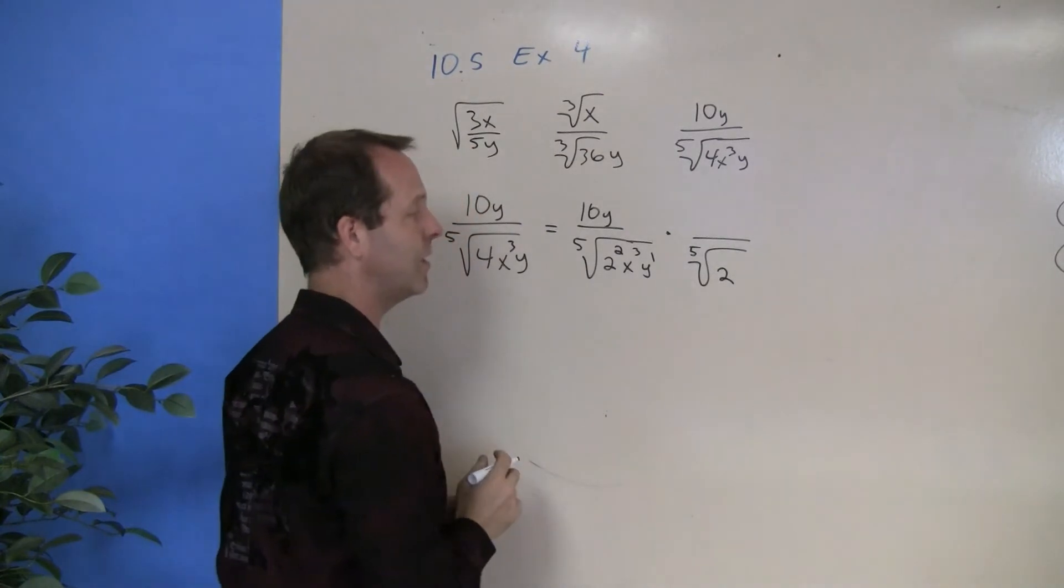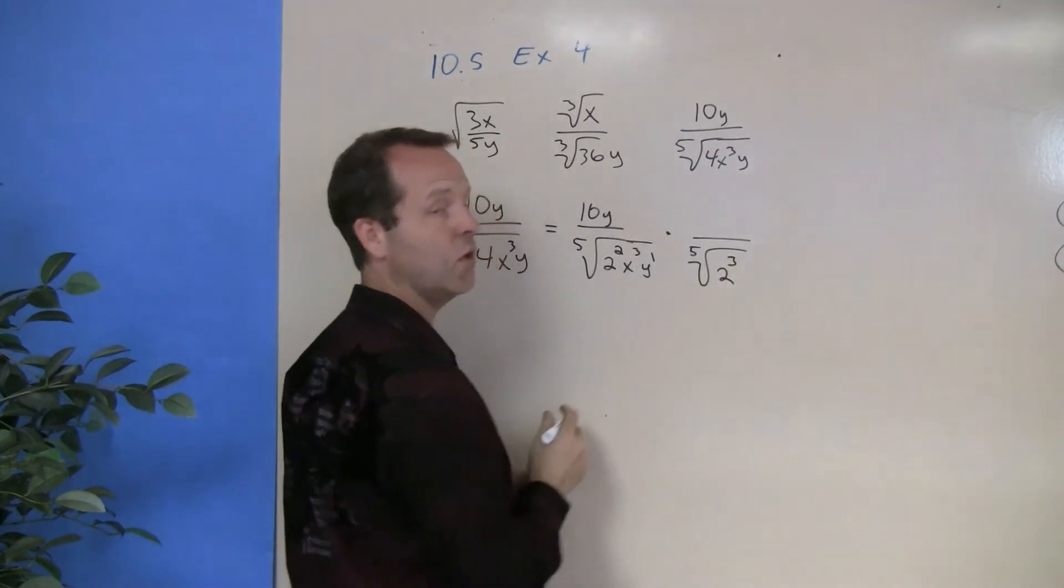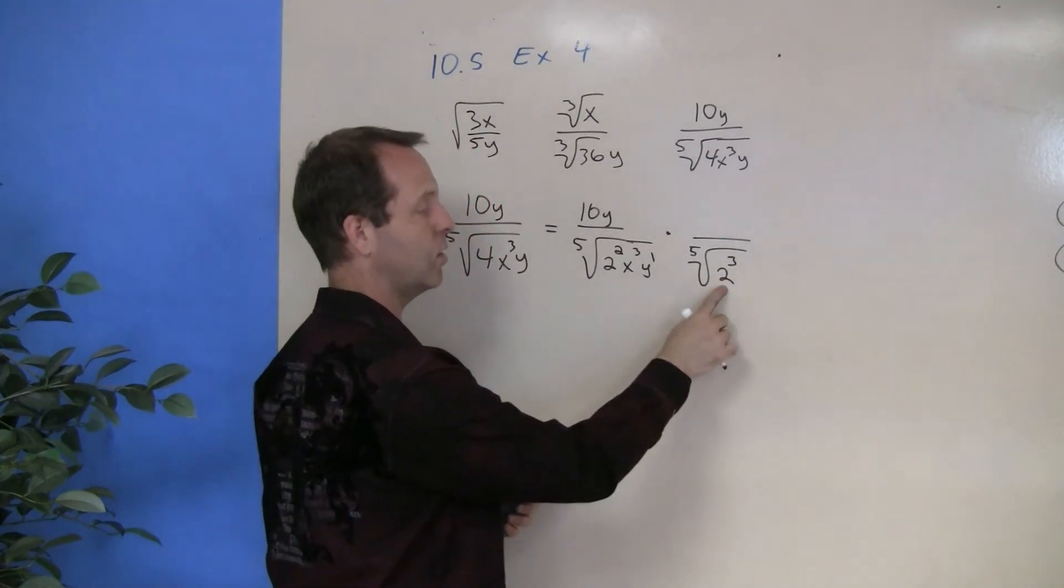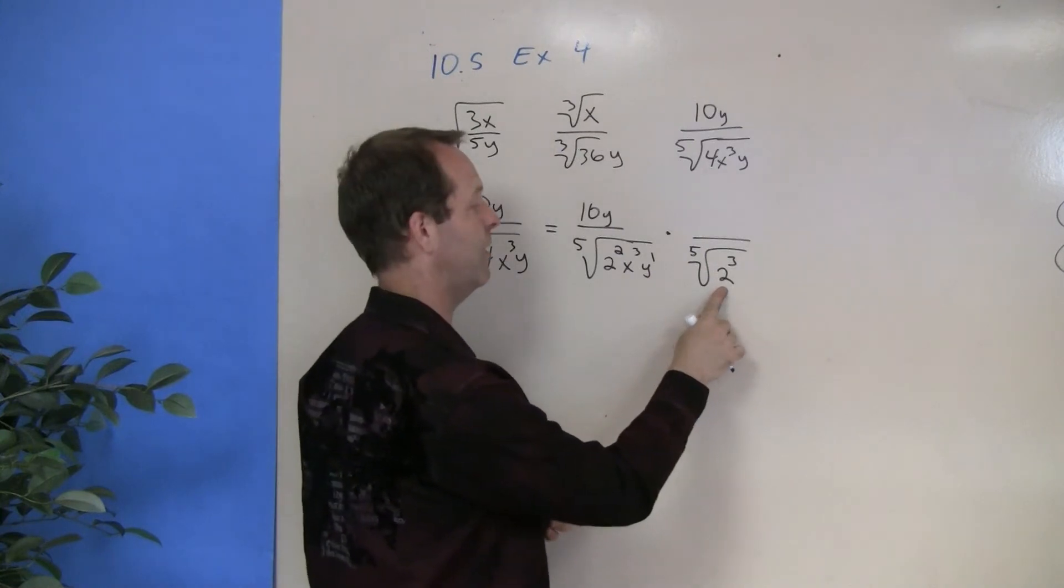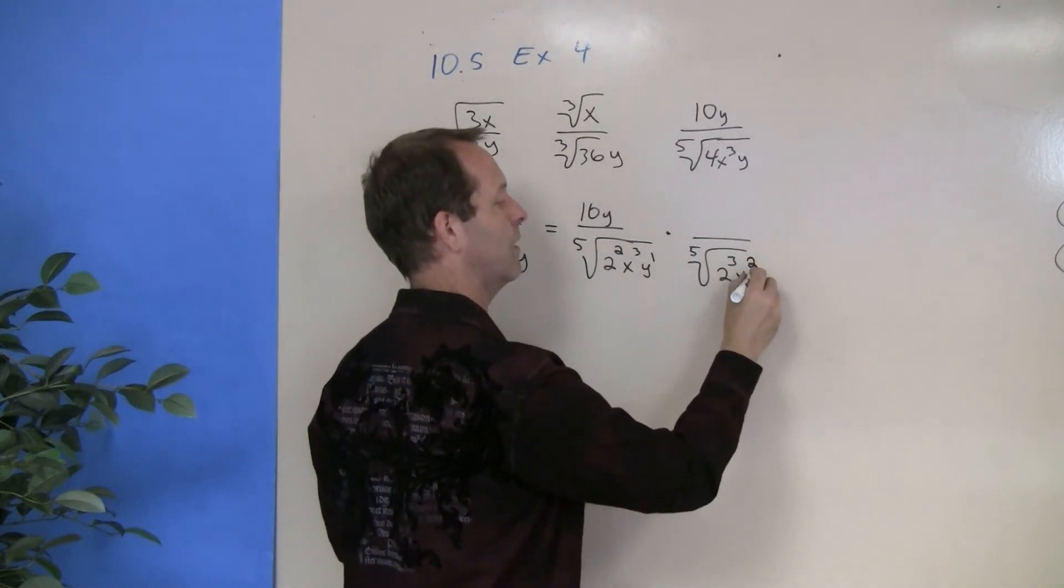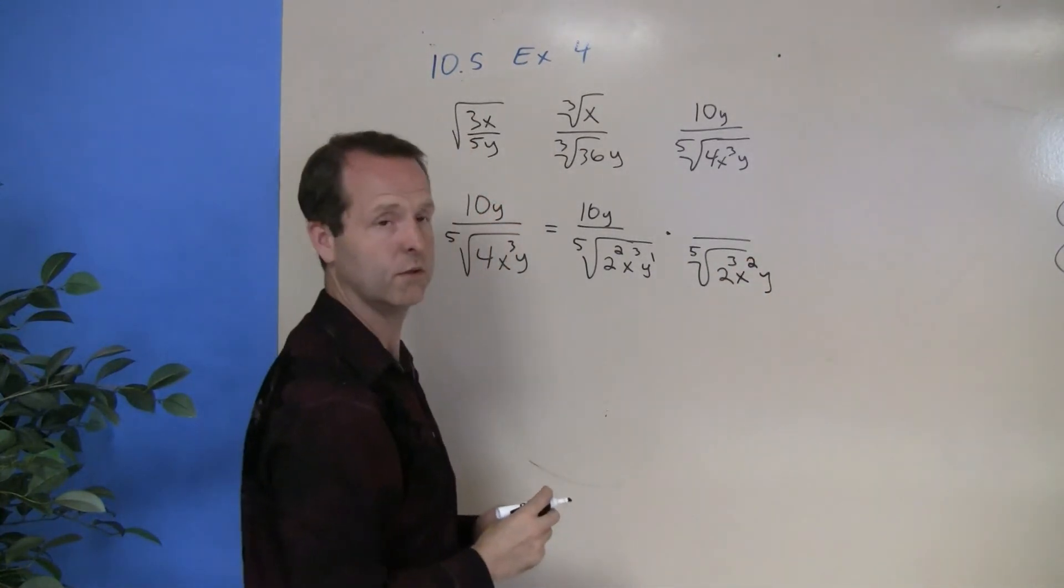So I got to have a 2. How about 2 to the third? Because 2 squared times 2 to the third is 2 to the fifth. x squared, and y to the fourth.